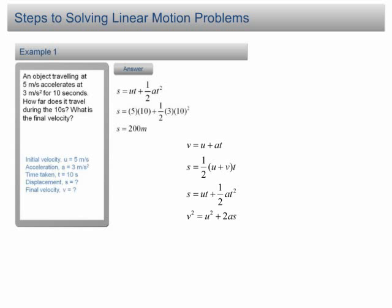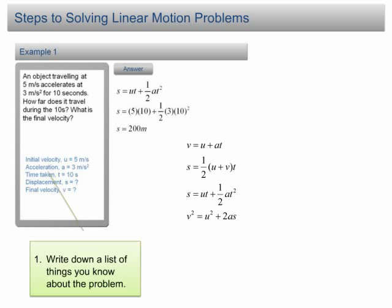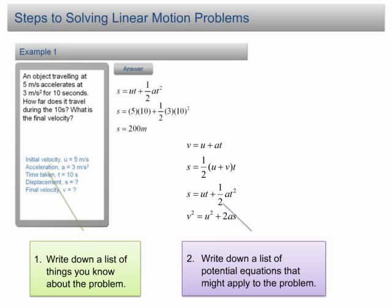The steps of solving physics problems are: first, write down a list of things that you know about the problem. For example, is velocity given? What is the acceleration? Second, write down a list of potential equations that might apply to the problem.